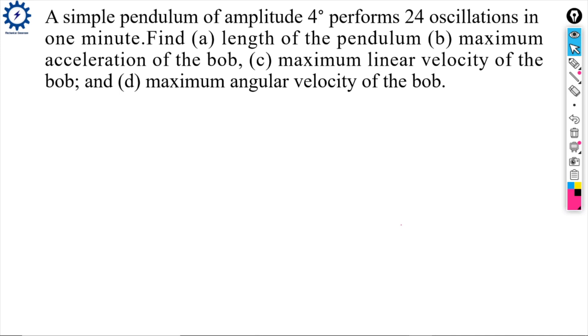A simple pendulum of amplitude performs 24 oscillations in 1 minute. Find: (a) length of the pendulum, (b) maximum acceleration of the bob, (c) maximum linear velocity of the bob, and (d) maximum angular velocity of the bob.